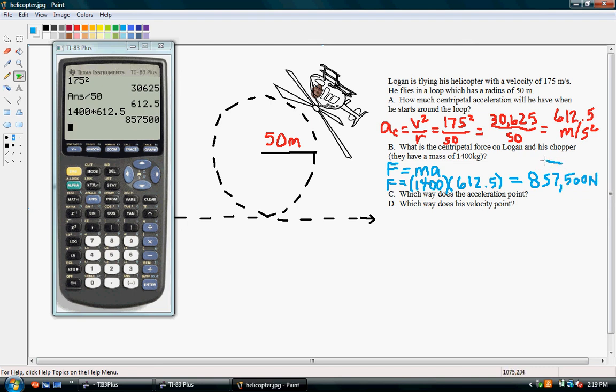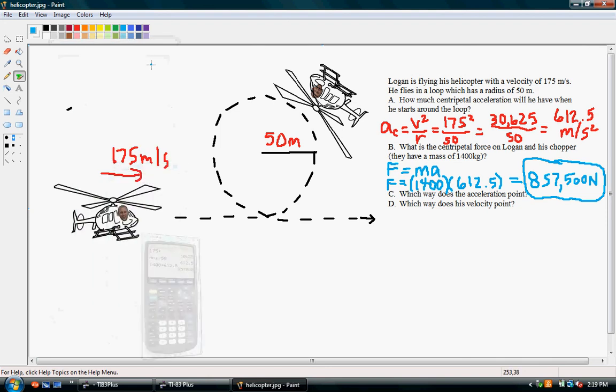Okay, so it takes a lot of centripetal force to get that helicopter to go around in a loop. All right, so which way does the acceleration point? All right, guys, you should know this. For centripetal acceleration and centripetal force, in what direction does the acceleration point? It points towards the center.